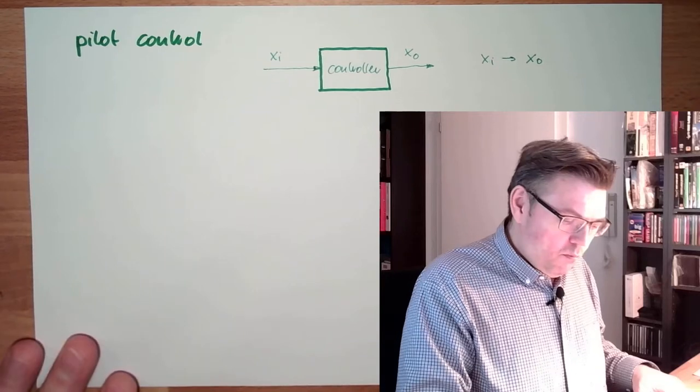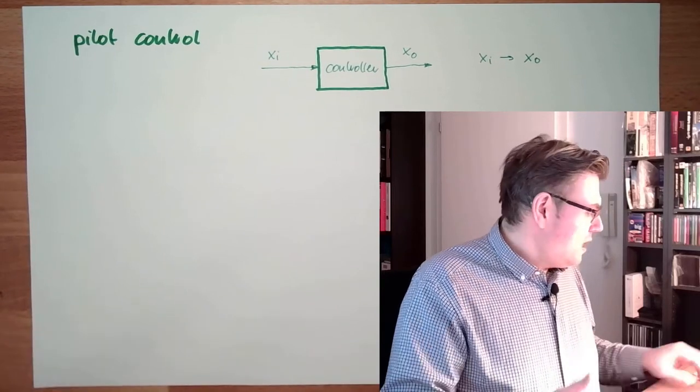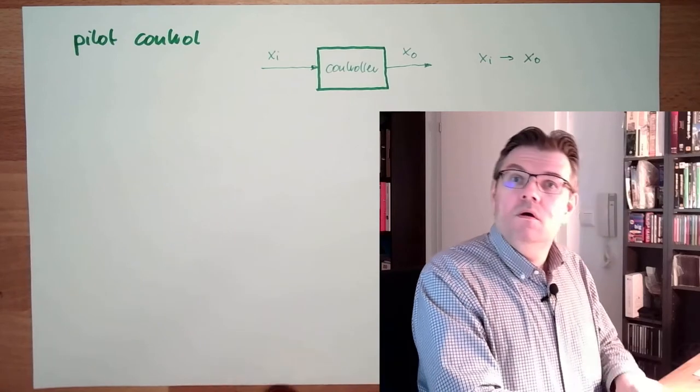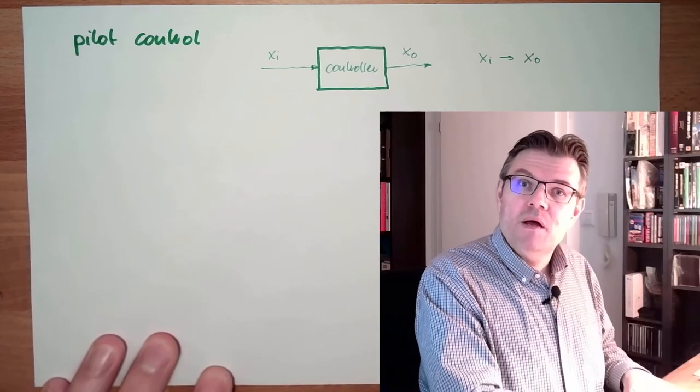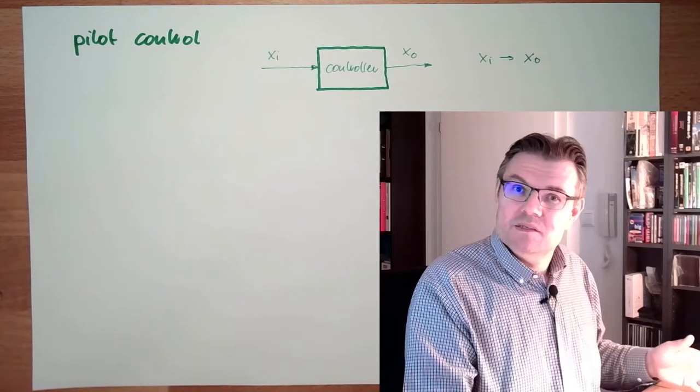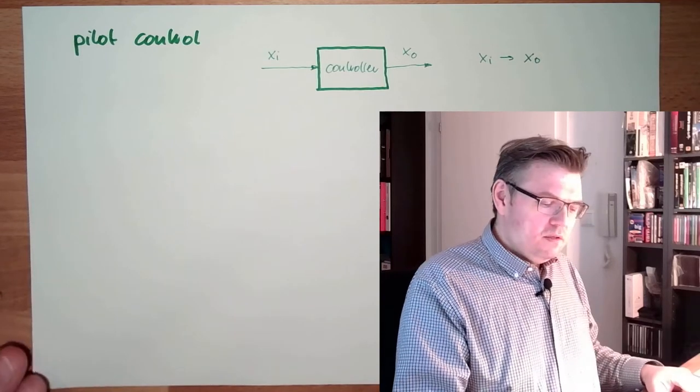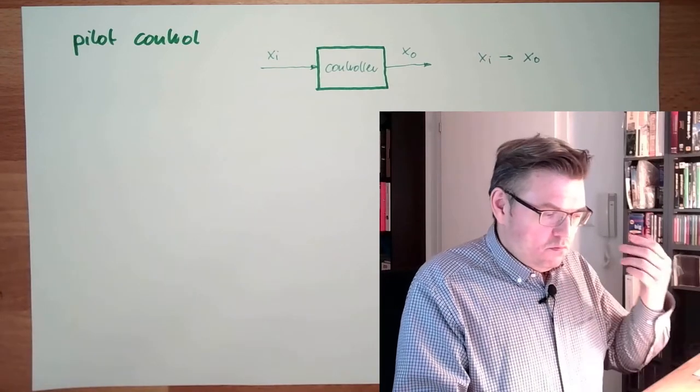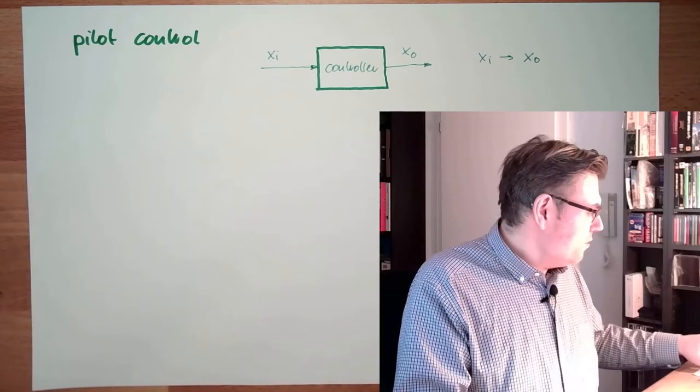One example is there's a button, you press the button, then there's light. You release the button, no light. It doesn't really make sense, but that's how it is done. The pilot control.